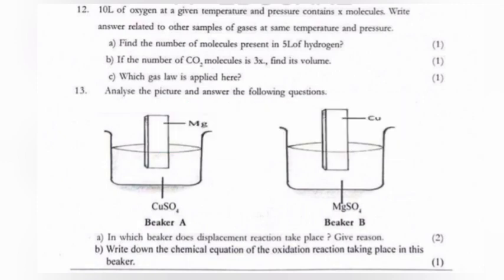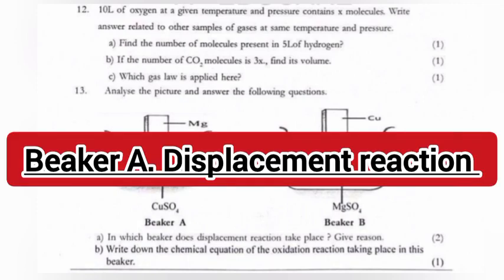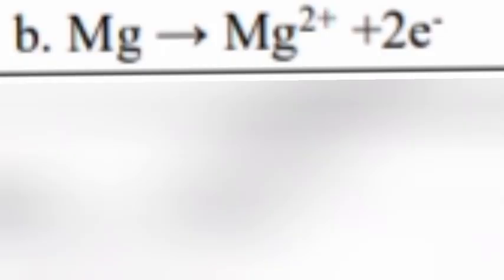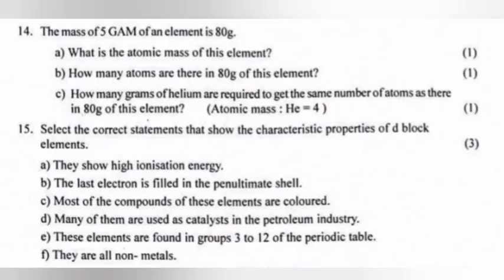Answer: Avogadro's law. Question 13: Analyze the picture and answer the following questions. 13a: In which beaker does displacement reaction take place? Give reason. Answer: Beaker A. Displacement reaction. 13b: Write down the chemical equation of the oxidation reaction taking place in this beaker. Answer: Mg gives Mg2+, plus 2e-.